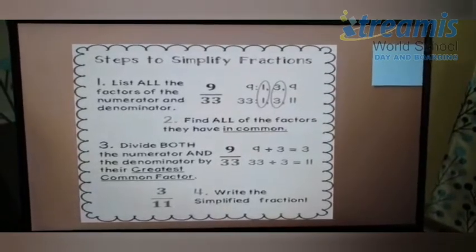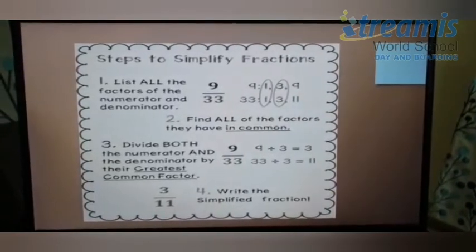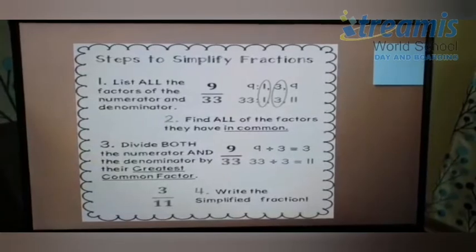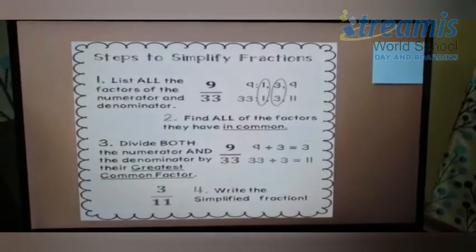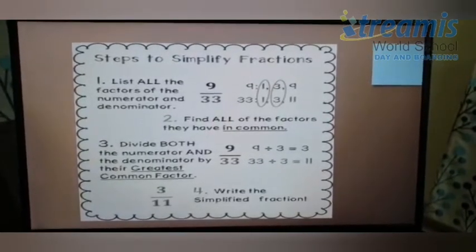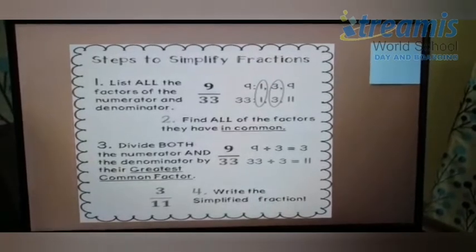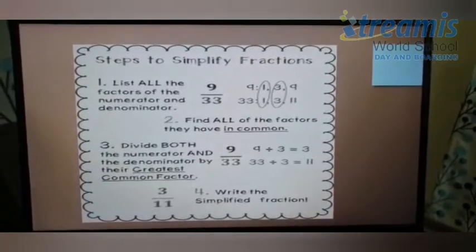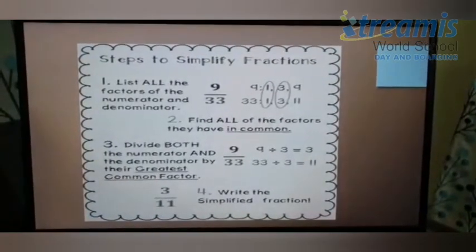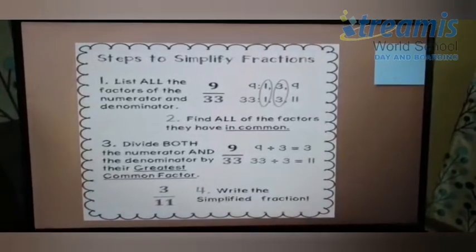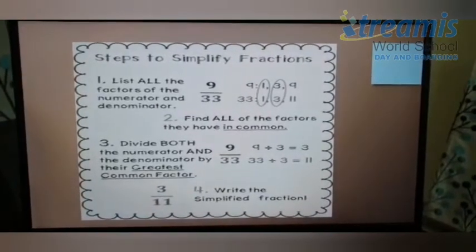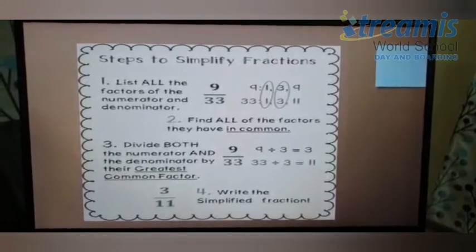Now, second step. In the second step, you need to circle all the common factors. So, since 1 and 3 are the common, I've circled both of them. Now, the third step is, you need to find out GCF and you need to divide both the numerator and the denominator by their greatest common factor.